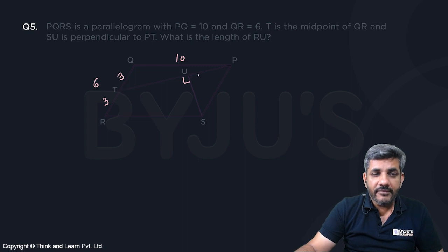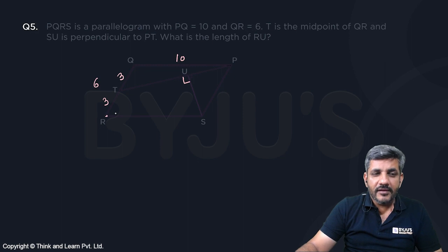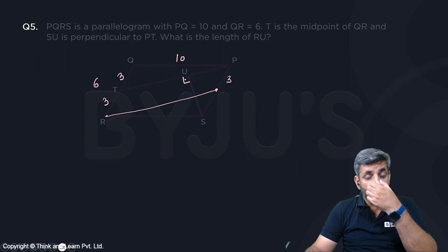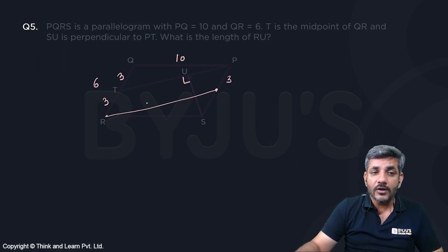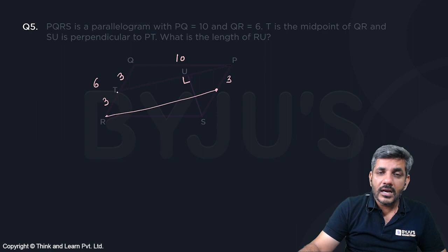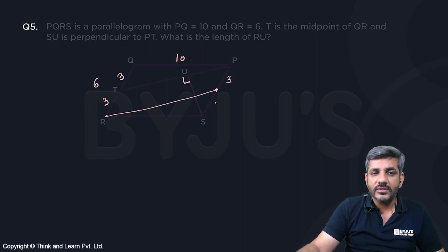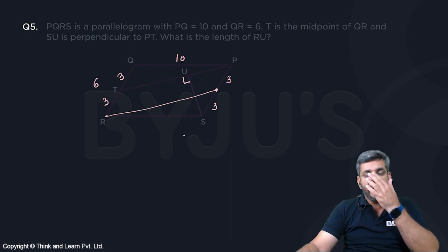I have a line segment PT here. From point R, if I draw a line parallel to PT, can I say it will also give me a length of 3 here, because it will also become a parallelogram? Opposite sides of a parallelogram are equal. So if I draw a line parallel to PT and it meets PS, these two lines are parallel, so this side would also equal 3, making it also a midpoint.